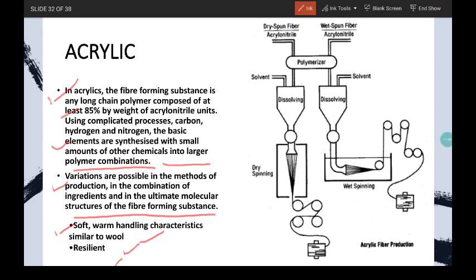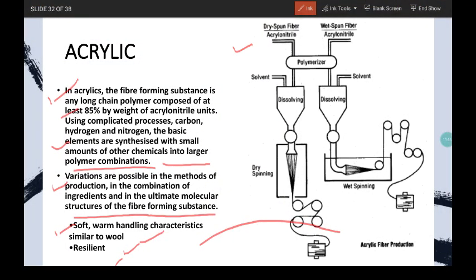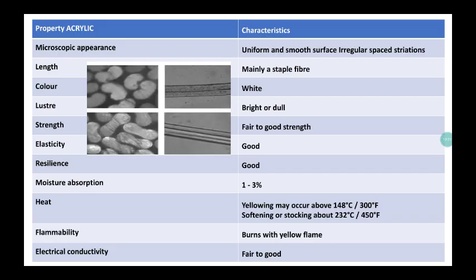And it has good resilience properties. It can be prepared by two methods: dry spun fiber or wet spun fiber. Acrylonitrile is kept for polymerization. After polymerization, it is passed through the spinneret, and both spinning methods can be used. For dry spun fibers, dry spinning has been done, and for wet spun fibers, wet spinning can be done. Just take a look at the properties of this fiber.